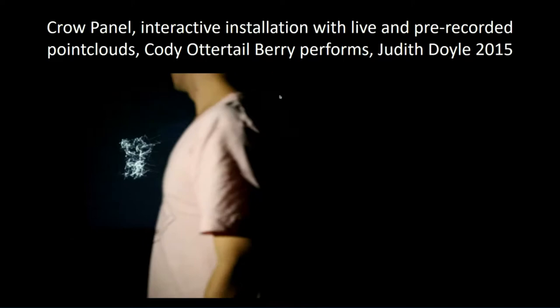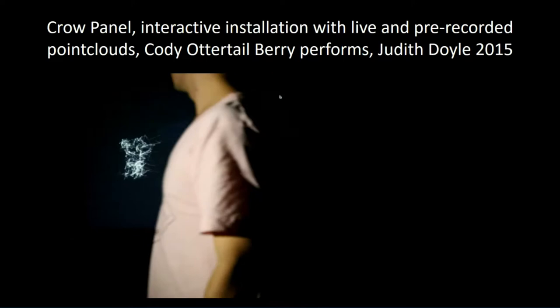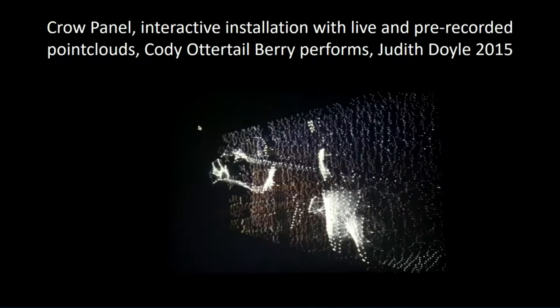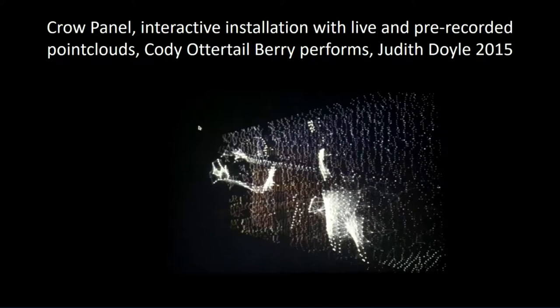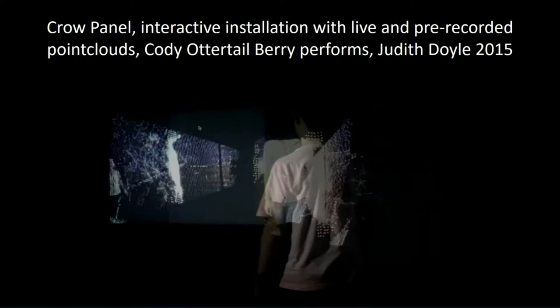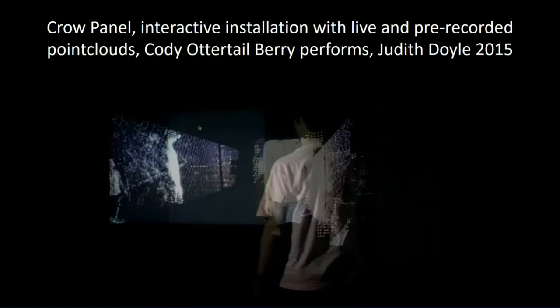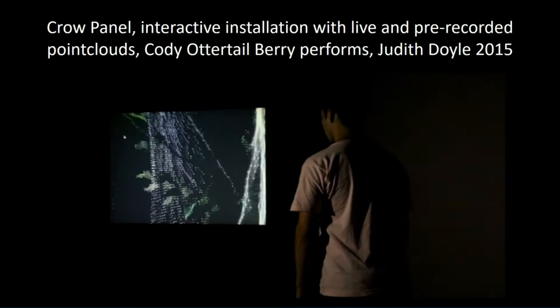The background images are pre-recorded, and depending upon what point you enter the ONI file from, they look completely different. In the foreground, that's Aboriginal two-spirited dancer Cody Ottertail Berry, engaging with the pre-recorded imagery. His image is influenced with Perlin noise, which has been a very big component — a sort of secret sauce in a lot of what we've been doing with these applications. Perlin noise allows us to create a relationship between the active and inactive dots within the point cloud itself.